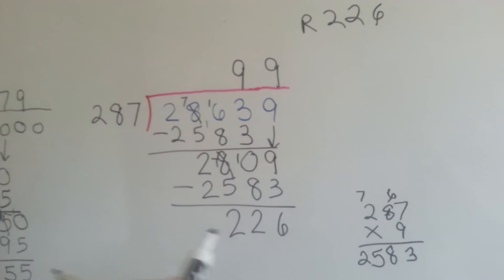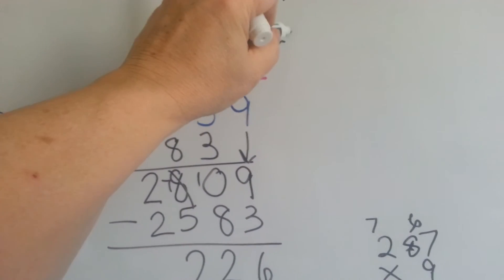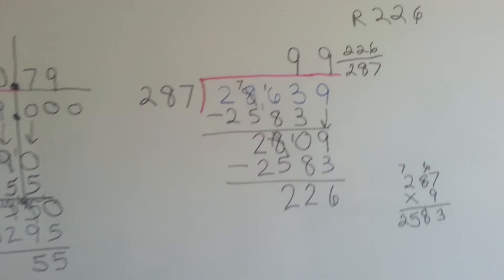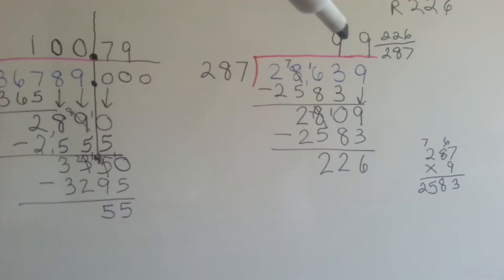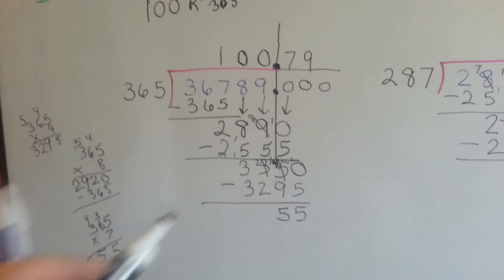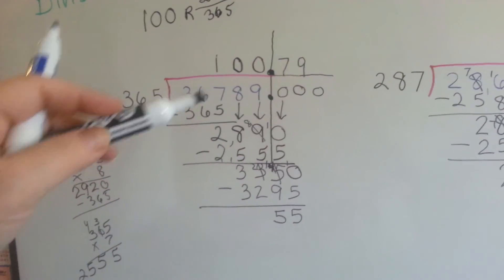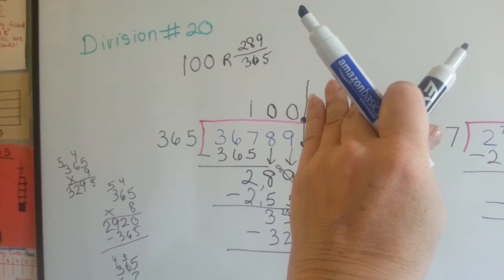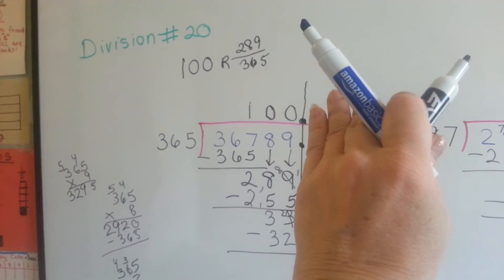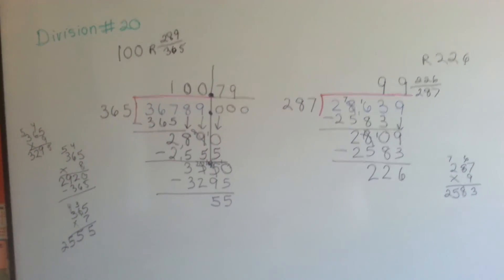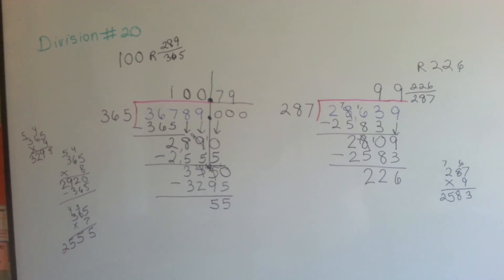And our answer would be 99 and our fraction. And we'd either have a remainder of 226. Or, we could say it's 99 and 226 over 287 as a fraction. So, you could write your answer like this, or you could take this away and say it's 99 and remainder 226. On this one, we can keep going and adding zeros forever and making the decimal point extend past the 100. Or we can stop right there and say that the answer is 100, remainder 289 or remainder 289 over 365. Either way, I hope this helps. And keep trying and look through my other videos in the division folder and maybe they'll help. Bye!